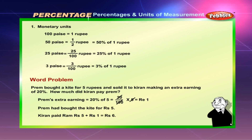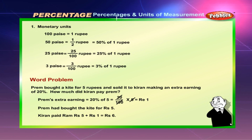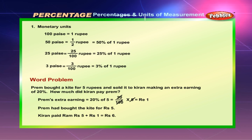Percentages and units of measurement — monetary units. 100 paise is equal to 1 rupee. 50 paise = ½ rupee, which is equal to 50% of 1 rupee. 25 paise = 25/100 rupee, which is equal to 25% of 1 rupee. 3 paise = 3/100 rupees, which is equal to 3% of 1 rupee.